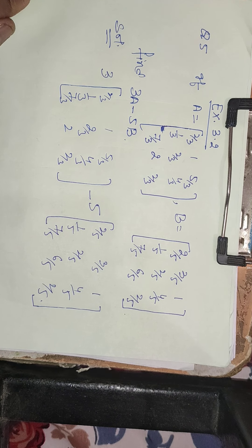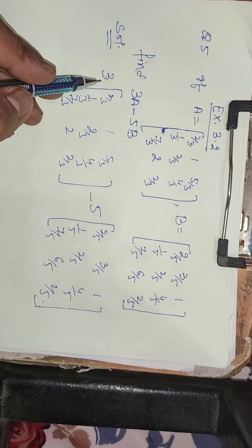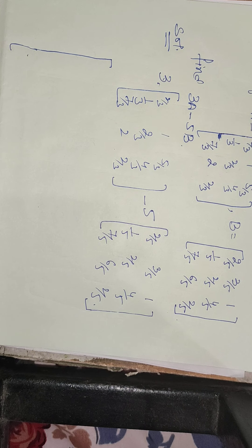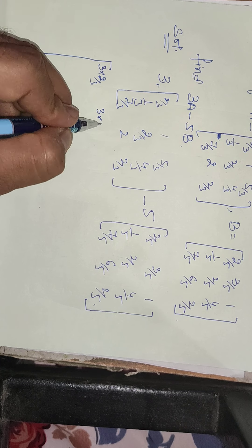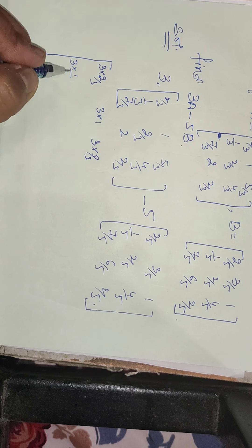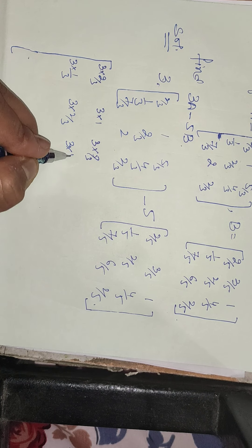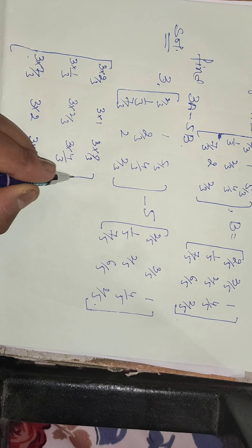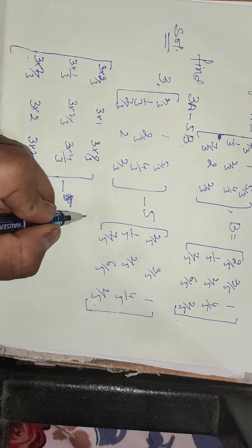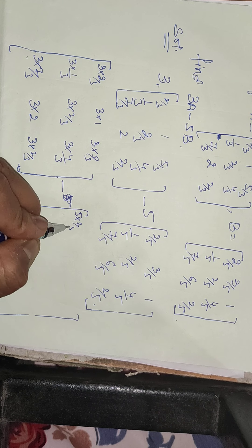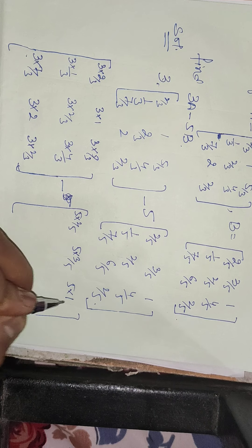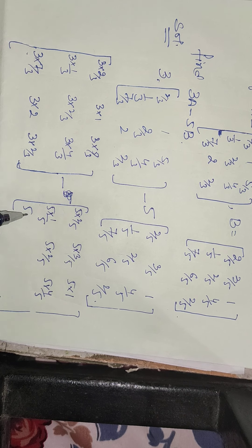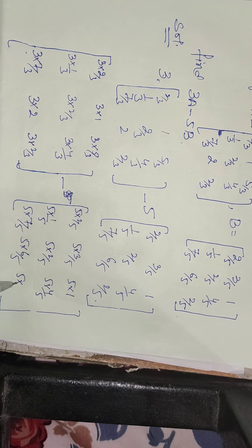We know what scalar multiplication is — we have to multiply the scalar value with each element of the matrix. So 5 into 2/5, 5 into 3/5, 5 into 1/5, 5 into 4/5, 5 into 7/5, 5 into 6/5, and 5 into 2/5.